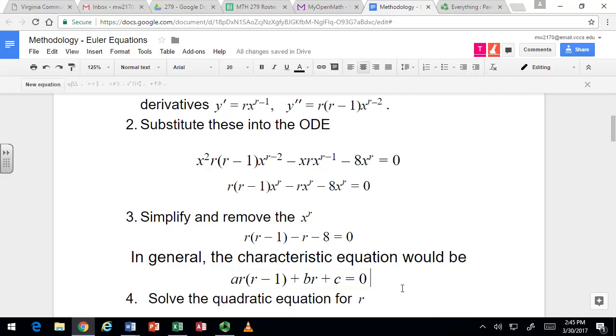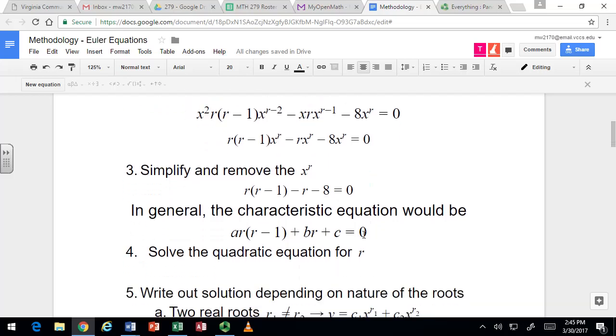This is of course a quadratic equation for r. So much like the constant coefficient ODEs, we can solve that using factoring or the quadratic formula and we'll likely have three different cases, right? So let's solve this one and see what happens. I'm going to distribute it out first. So we've got r squared and then I've got minus r minus r that's minus 2r and then minus 8 equals 0.